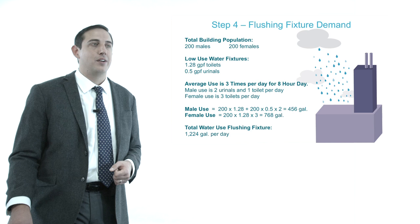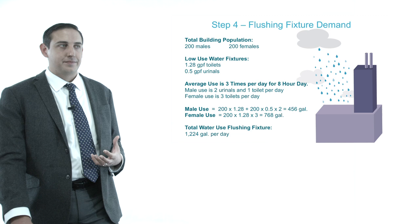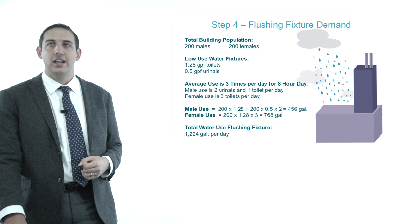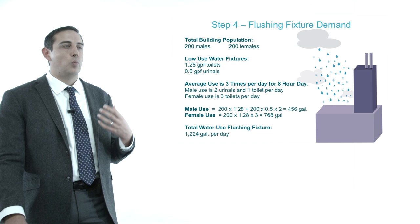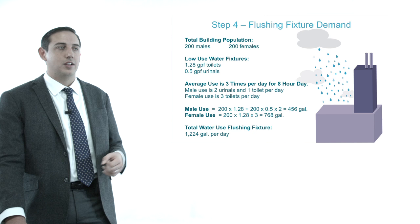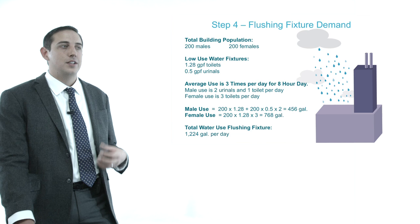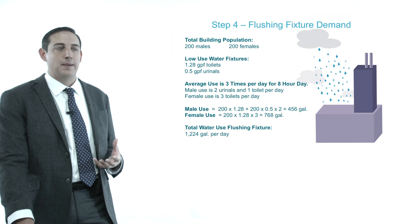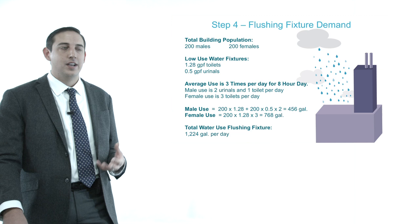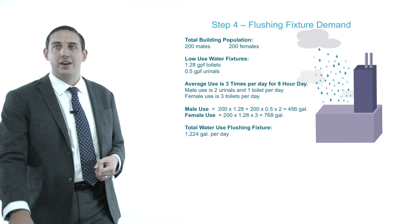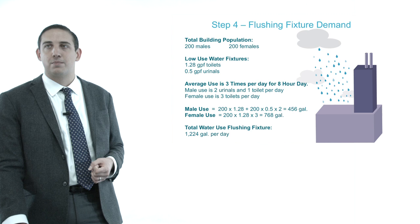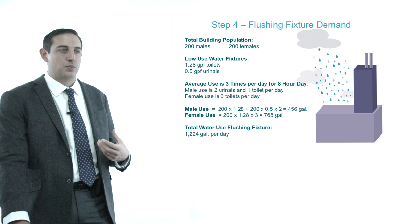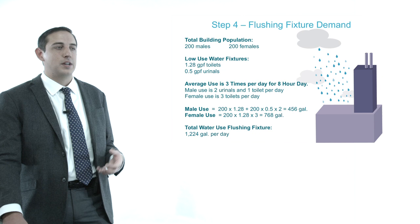The next step is to size my flushing fixture demand. You look at the building occupancy as well as transient occupancy, and what your water fixtures are. In this case, I'm using 1.28 gallons per flush per toilet and 0.5 gallons per flush for urinals. Average use is three times per day in an eight-hour period. For a male, it's two urinal uses and one toilet use per day. For a female, it's three toilet uses per day. So the male use is 200 × 1.28 + 200 × 0.5 × 2 = 456 gallons per day based on 200 male occupancy. For females, it's 200 × 1.28 × 3 = 768 gallons per day. My total water use for flushing fixtures is 1,224 gallons per day.